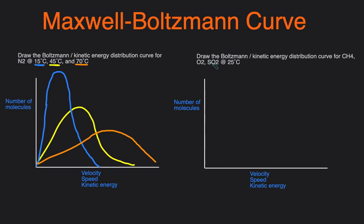Now let's look at the next example where we draw curves for CH4, O2, and SO2 at 25°C. This time the temperature is the same and it's the identity of the gas that's changing — more specifically, the molar mass. CH4 is 16, O2 is about 32, and SO2 is about 64. Molar mass is inversely related to how fast molecules move: heavier molecules move slower and lighter molecules move faster. So CH4 moves the fastest, then O2 second, and SO2 the slowest.